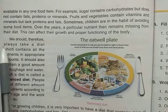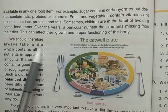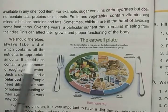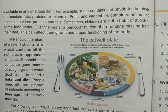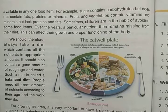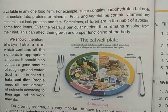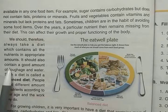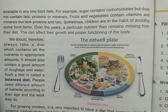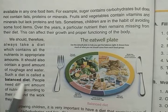So we should always take a diet which contains all the nutrients in appropriate amount. A balanced diet is a diet which contains all the types of nutrients in proper amount. It should also contain a good amount of roughage. Such a diet is called a balanced diet.